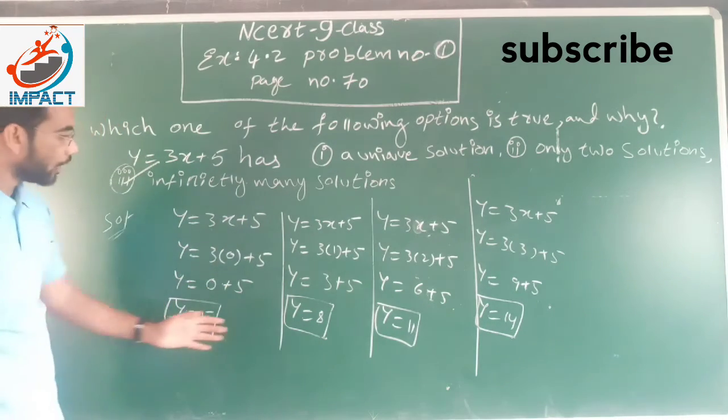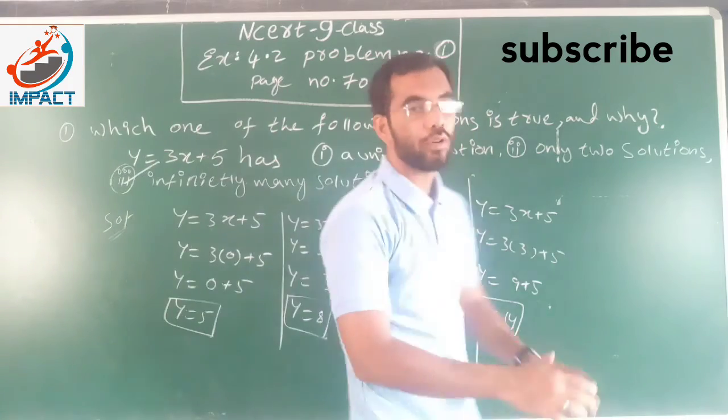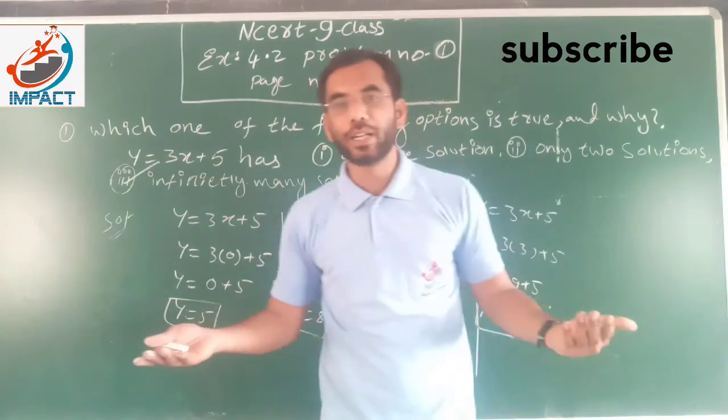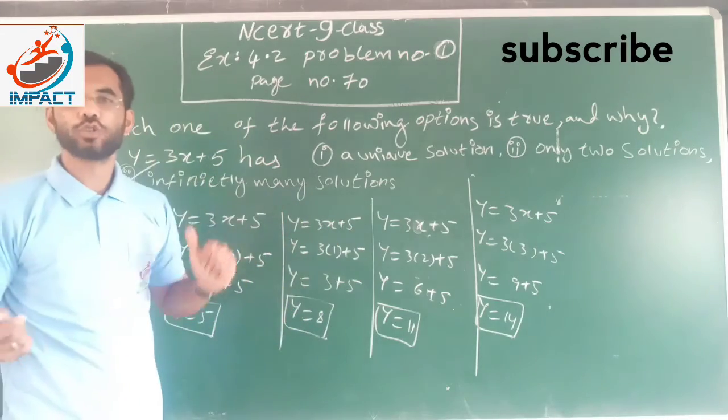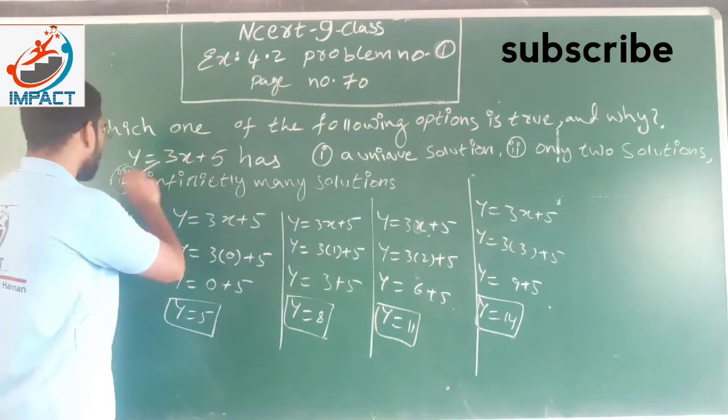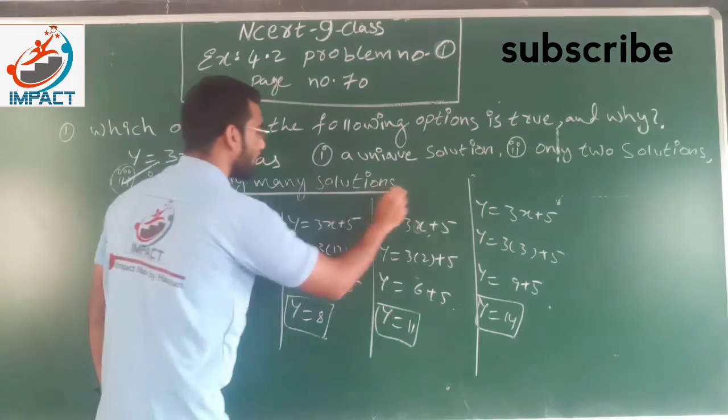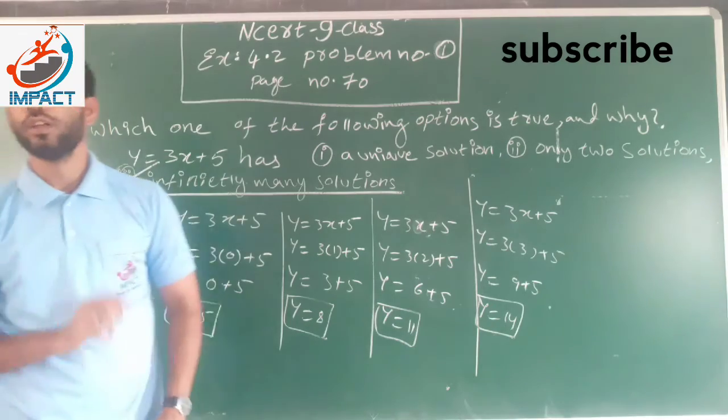Because we are 1, 2, 3, 4 so on. It is unlimited. Unlimited we are getting. So it is infinitely many solutions. Answer is infinitely many solutions. Infinitely many solutions is the answer of this problem.